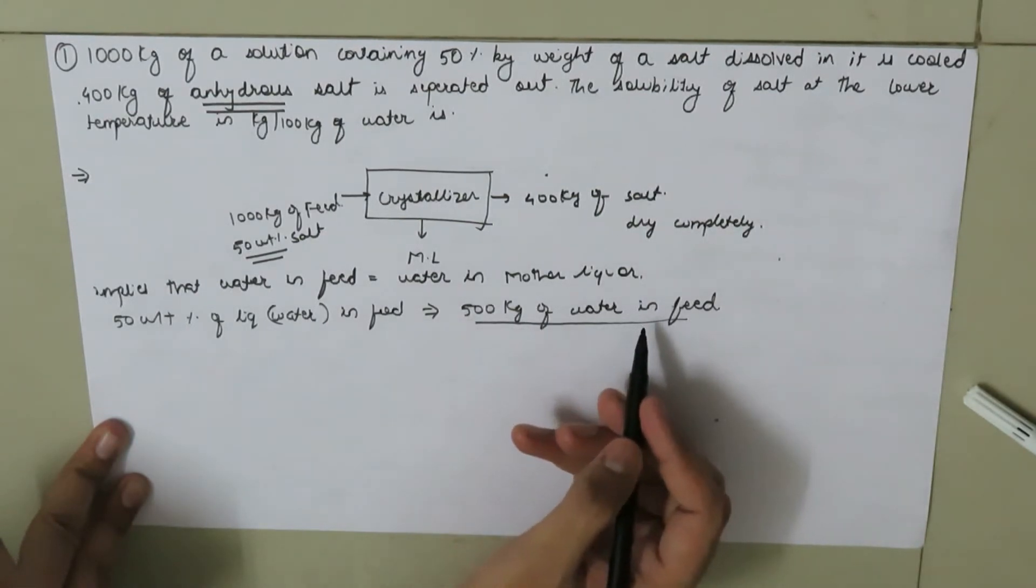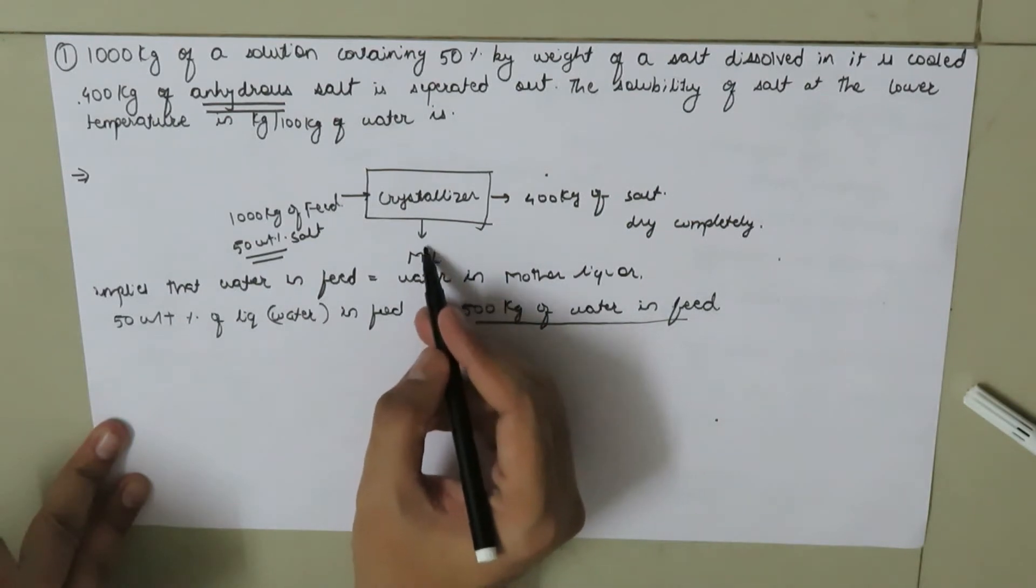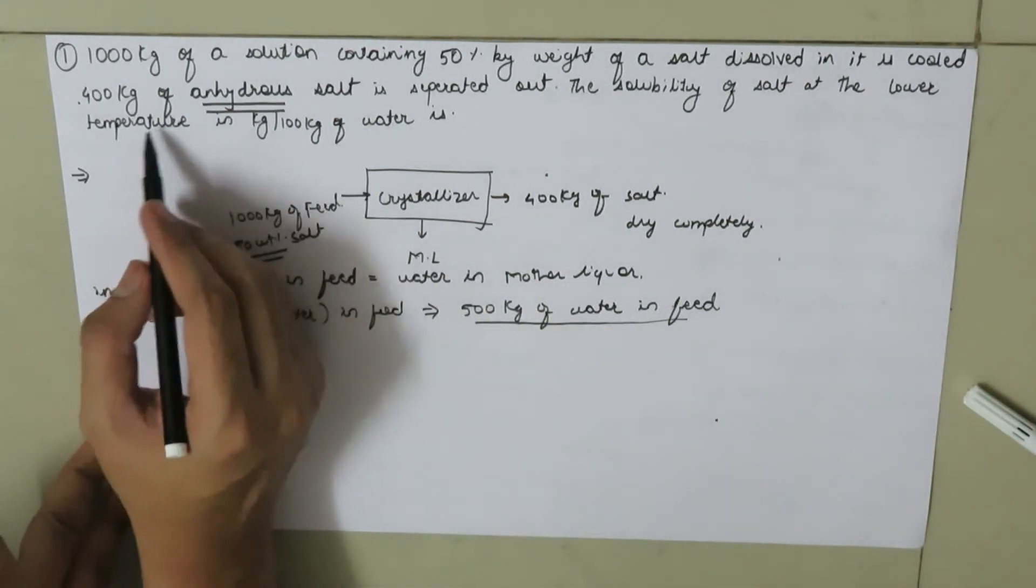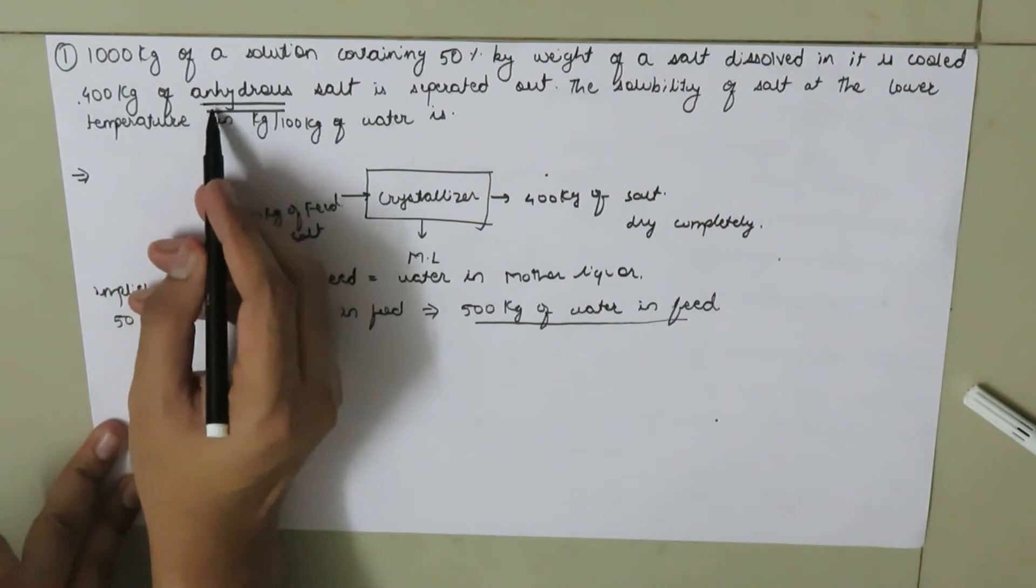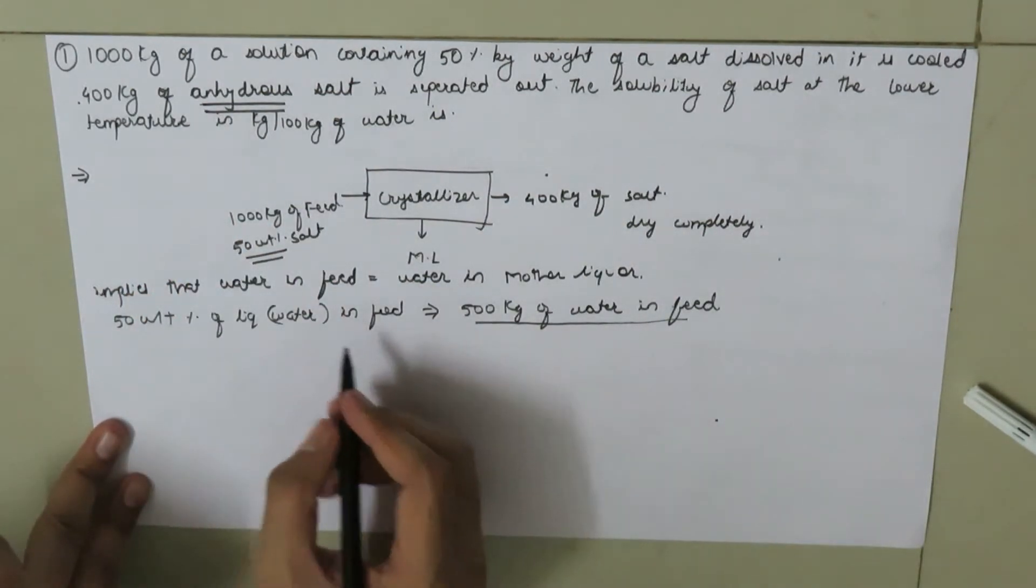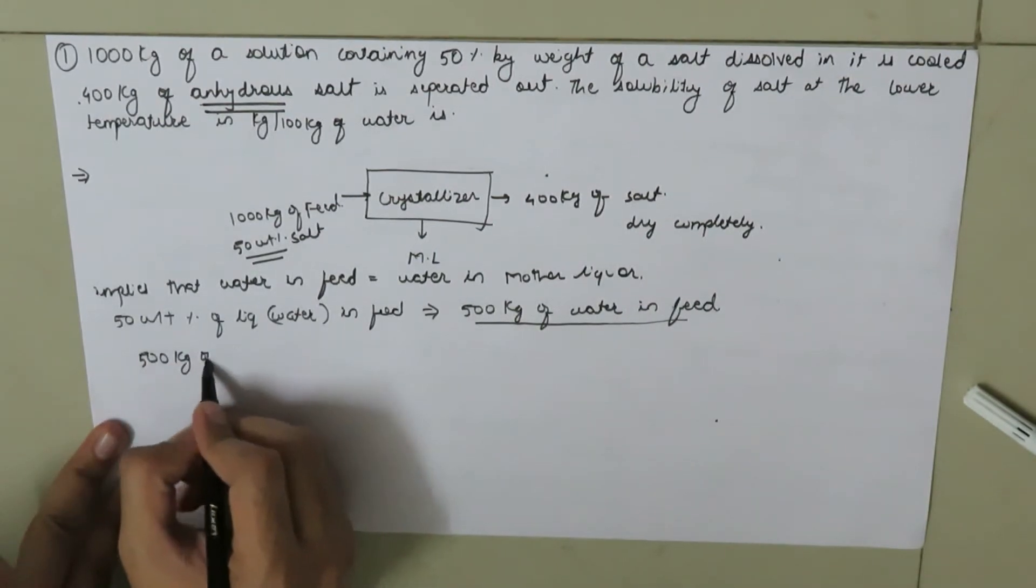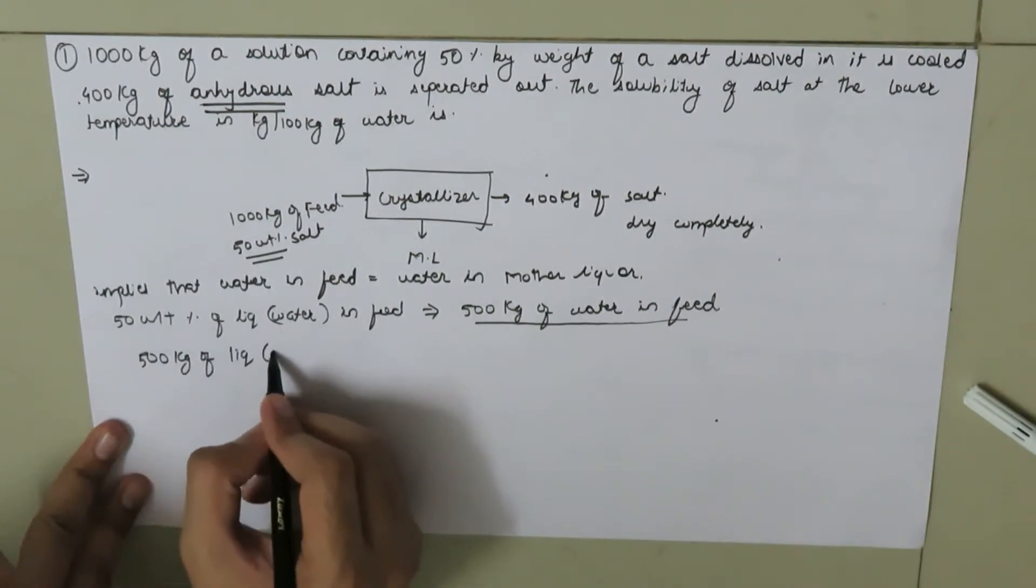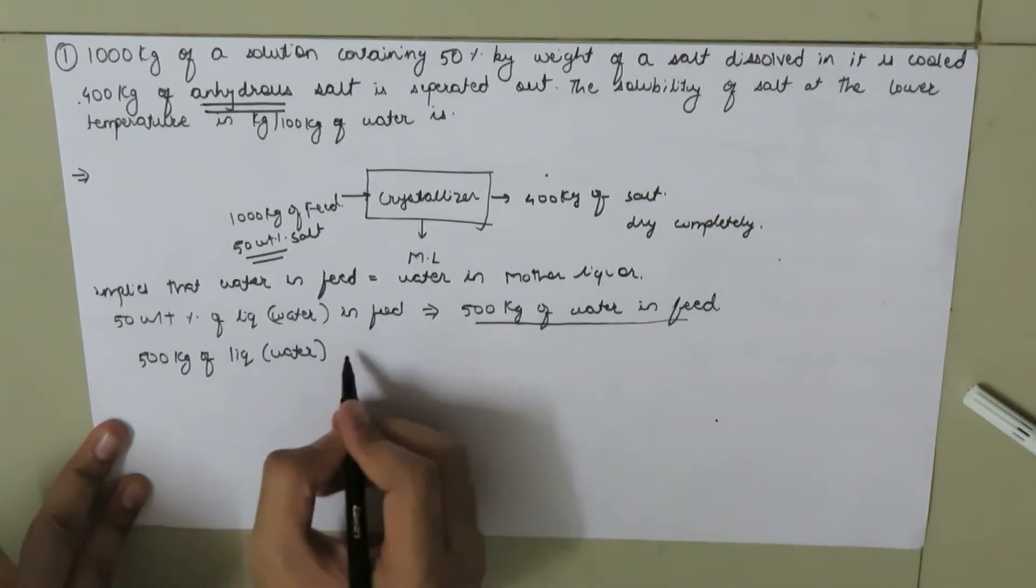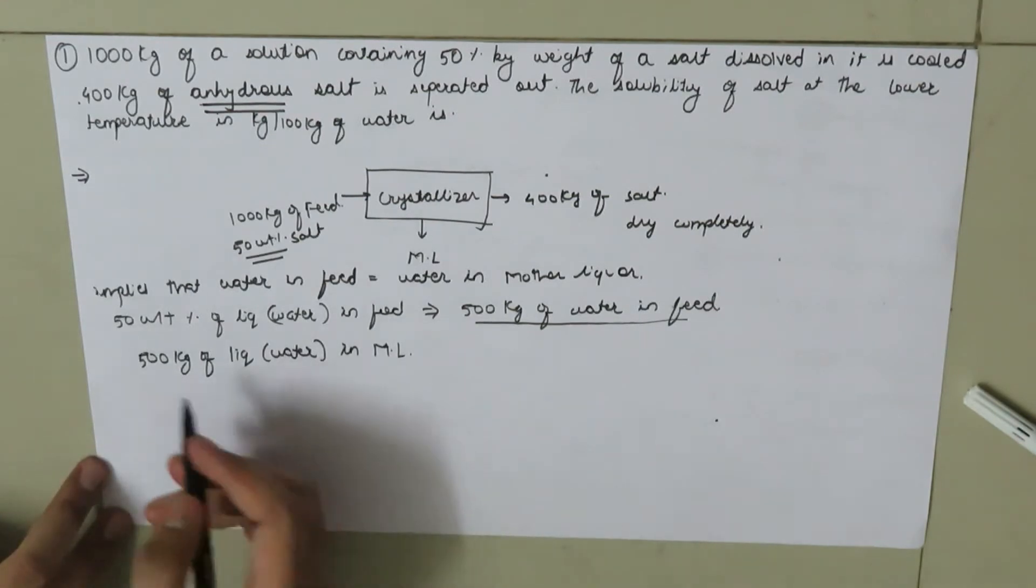This quantity of water which is present in the feed is equal to the quantity of water which is present in the mother liquor, because they have mentioned that the salt which is obtained is completely dry, that is anhydrous. So we have 500 kg of liquid, that is water, in mother liquor.